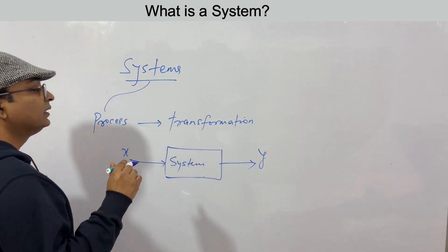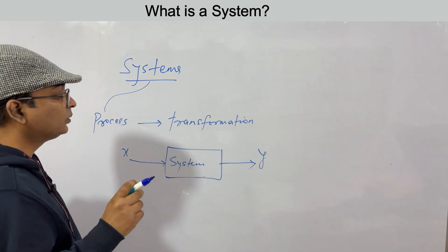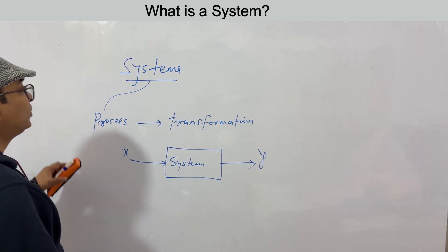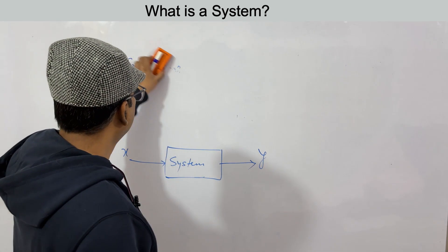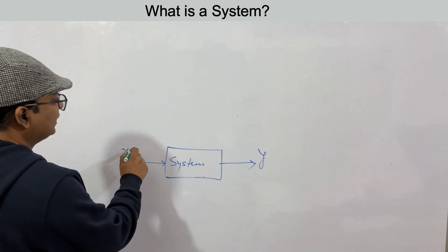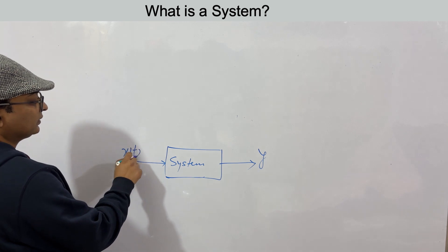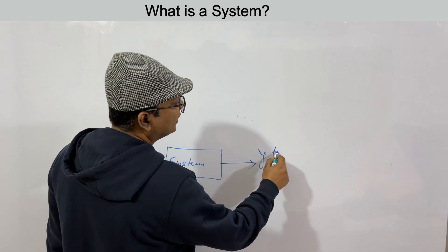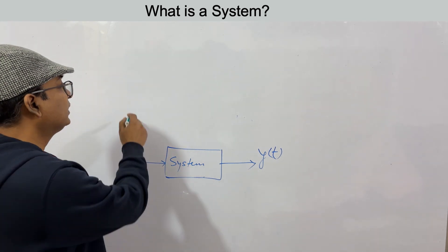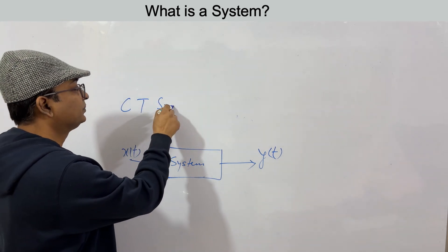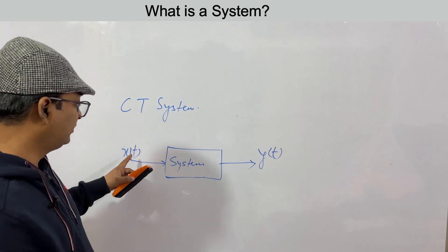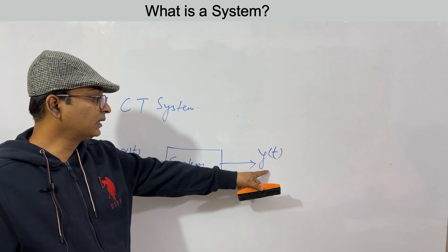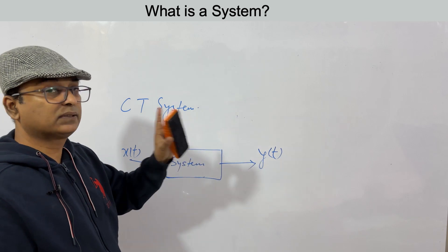We have two types of signals — continuous time and discrete time — and similarly we have two types of systems. A continuous time system is one where the input signal is continuous and the system responds such that we get a continuous time output signal.